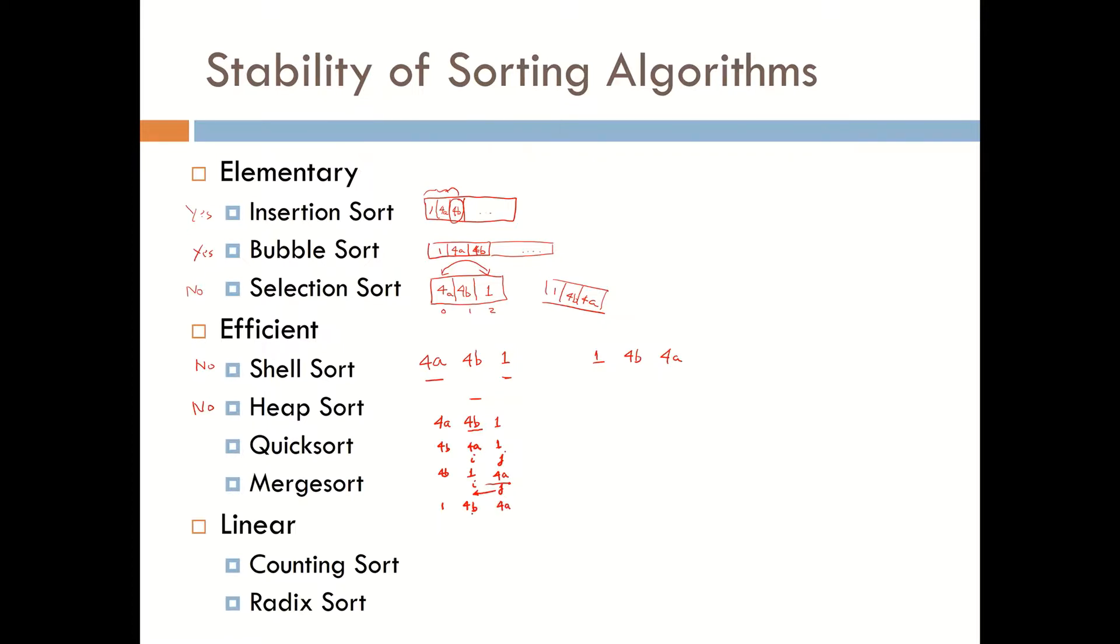And since b was our pivot way back here, 4b, this now is locked into place, and we sort a list of one to the left and a list of one to the right. They both stay in place, but we have lost our order. Therefore, quick sort is not stable.